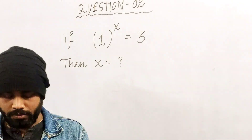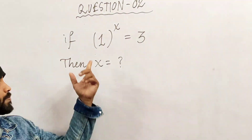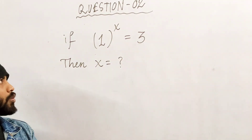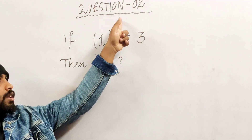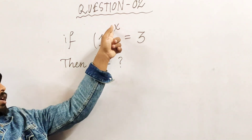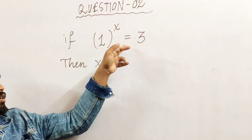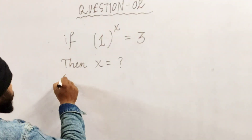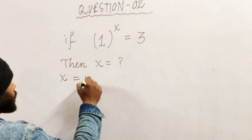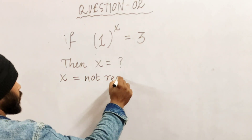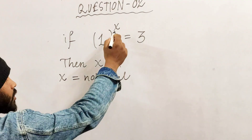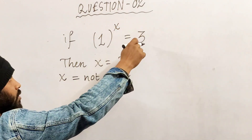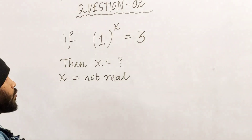The second question is: 1^x = 3. You know that no matter what real number you put here, 1 raised to any real power is always equal to 1. So here also x seems not to be real, because if x were real, this quantity is always equal to 1.